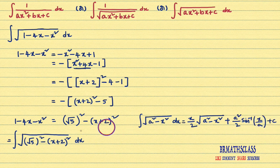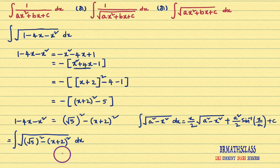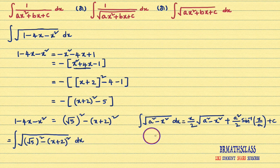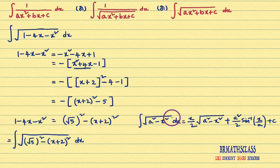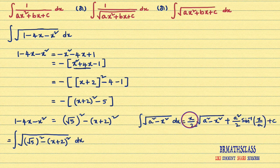This is the formula. The actual point is I need to integrate this. We can integrate this by using the substitution method, but if I do this problem by substitution method here, it creates unnecessary confusion. The main point is we can write this answer directly by observing this formula. You observe here: in place of a², (√5)² is there. In place of x, x + 2 is there. So in this formula, wherever x is there, write x + 2; wherever a is there, write √5. That's it — very simple.